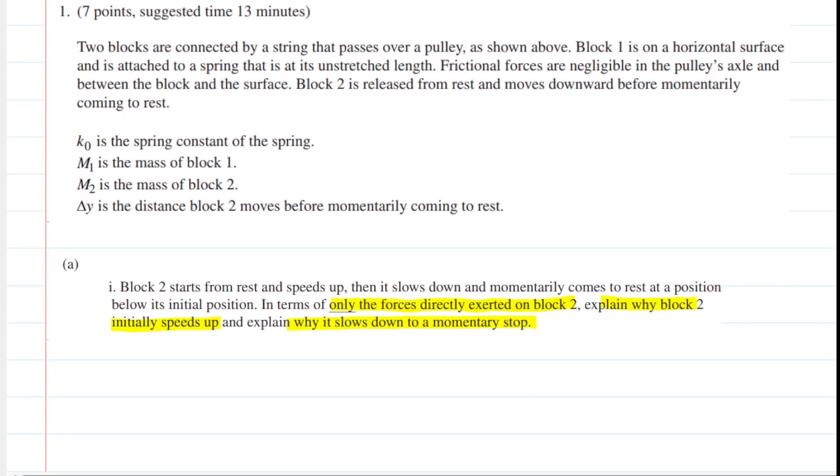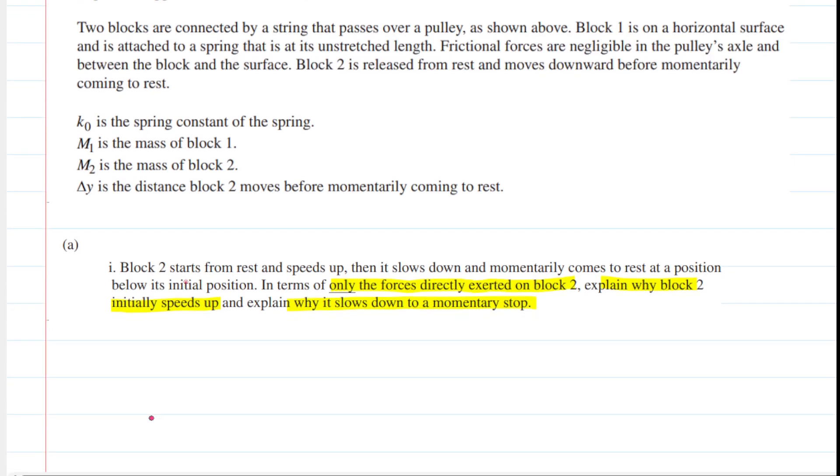Now, in order for us to explain that, we would want to consider the forces that are acting on Block 2. Of course, Block 2 possesses mass, so there's going to be a downward gravitational force acting on Block 2. We can call that force W because the weight of the block is equivalent to the gravitational force exerted on it.